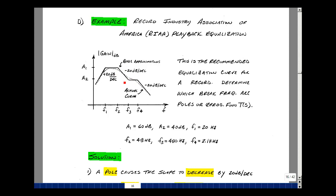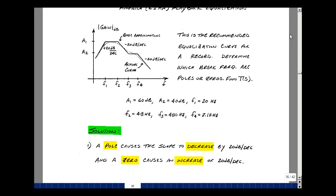Here I'm going from minus 20 to 0, that's an increase in slope, so this would be a zero at F3. And then lastly, I'm going from 0 dB per decade to minus 20, then encounter a pole again at F4. And this is summarized on the following page.